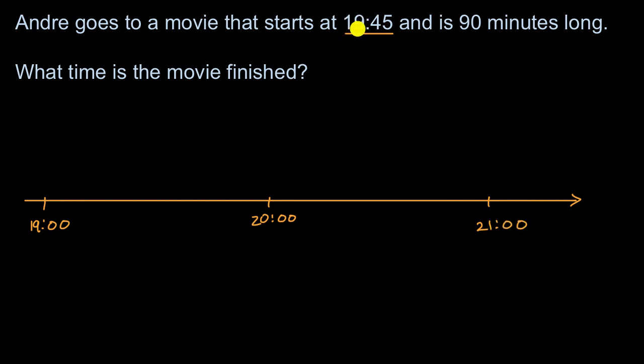Now what time does the movie start? It starts at 19 hours 45 minutes. So this would be 19 hours 30 minutes, which would be halfway between 19 hours and 20 hours, and 19 hours 45 minutes would be halfway between 19:30 and 20. So 19 hours and 45 would be right over there. That is 19 hours and 45 minutes, and that is when this movie is going to start.